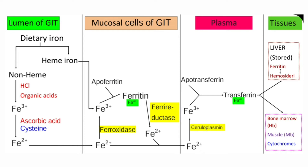This ferric iron combines with apotransferrin to form transferrin. Apotransferrin is a specific iron-binding protein, and each apotransferrin can bind with two ferric ions. In the plasma, iron is transported by a protein called transferrin. The plasma transferrin level is 250 mg/dL, and it can bind with 400 mg of iron per deciliter of plasma. This is known as the total iron-binding capacity of plasma, or TIBC.